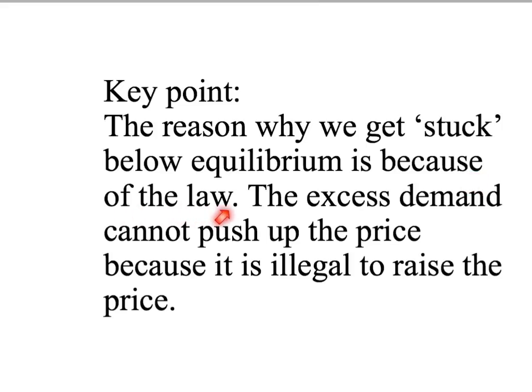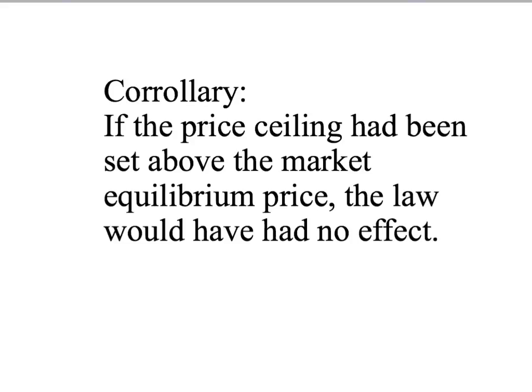So our key point is that we get stuck below the equilibrium price and below the equilibrium quantity. Why? Because the dynamic assumption — that when quantity demanded exceeds quantity supplied, price goes up — no longer applies. It no longer applies because it's illegal to raise the price. The excess demand cannot push up the price, leading to a low price but also a shortage. A simple corollary: if the government had set the price ceiling above the market equilibrium price, the law would actually have no effect.